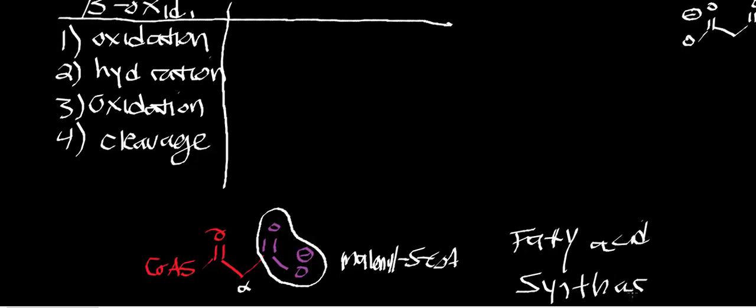Fatty acid synthase is really the first example of a special type of enzyme we're going to see. In general, this is the first enzyme that's a complex of multiple enzymes — and there are a lot of them — each with distinct enzymatic activities.